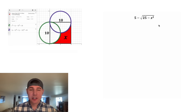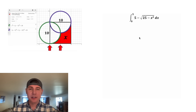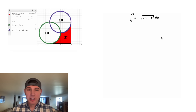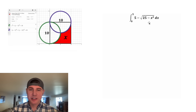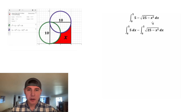That lower portion of the circle only touches the red region from x equals 0 to x equals 5. So when we set up our integral, we put 0 and 5 as the limits, and that will give us the area under that curve. One of the properties of integrals tells us we can split this into two separate integrals. The left-hand one we leave alone, but the one with the square root is going to take a little more work.